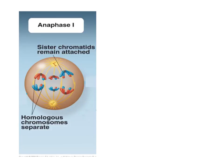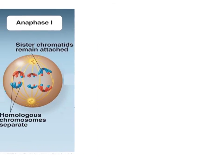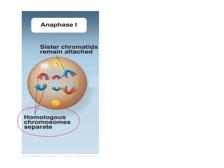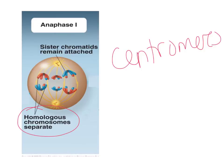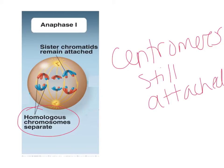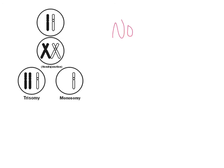After metaphase I comes anaphase I. The homologous chromosomes are what are separating here — the centromeres are not broken, so the sister chromatids are still attached. This is where we can have some possible mutations, in particular what's called non-disjunction — when the chromosomes fail to separate properly. There are two basic kinds: either the tetrad chromosomes don't separate properly, or the sister chromatids aren't separating properly.